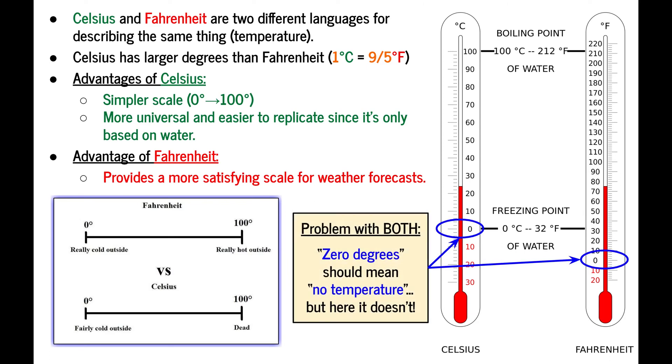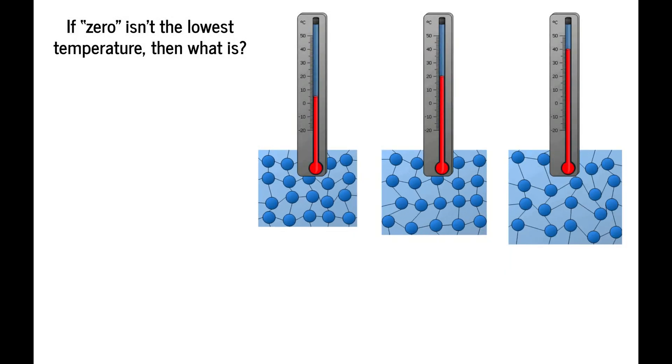Now both Celsius and Fahrenheit have a big problem and that is that 0 degrees should mean that a substance has no temperature because degrees are what temperature is measured in. So having 0 of it should mean you don't have any temperature. But in both scales, 0 is not the bottom. You can have negative 10 degrees, negative 20 degrees, and it keeps on going to bigger and bigger negative numbers the colder you get. This is a problem because you're going to run into situations where people misunderstand how hot or cold things are. For example, is 100 degrees twice as hot as 50 degrees? In both of these scales, the answer is no. 100 is not double 50. It should be, but in these scales it's not because 0 is not the bottom. You can go lower.